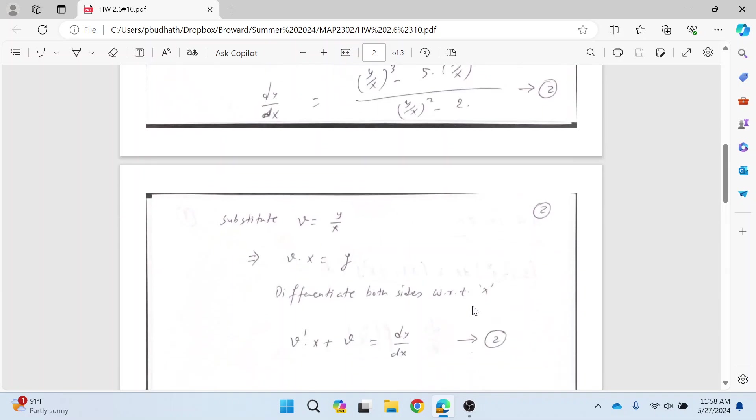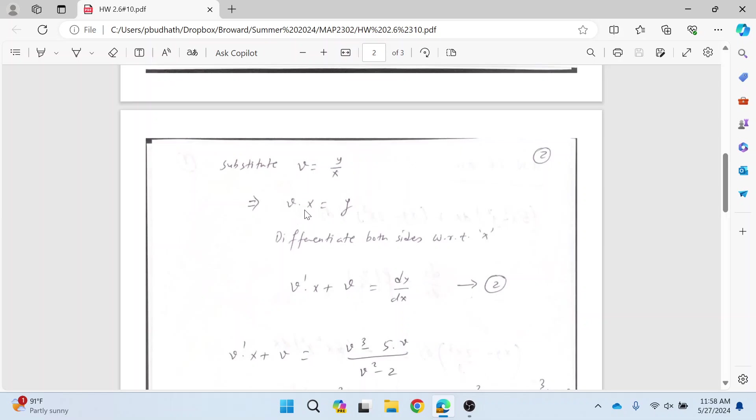Now differentiate both sides with respect to x. Use the product rule here on the left side, and derivative of v times x plus derivative of x, which is one, you don't have to write that. And the derivative of y with respect to x is this.